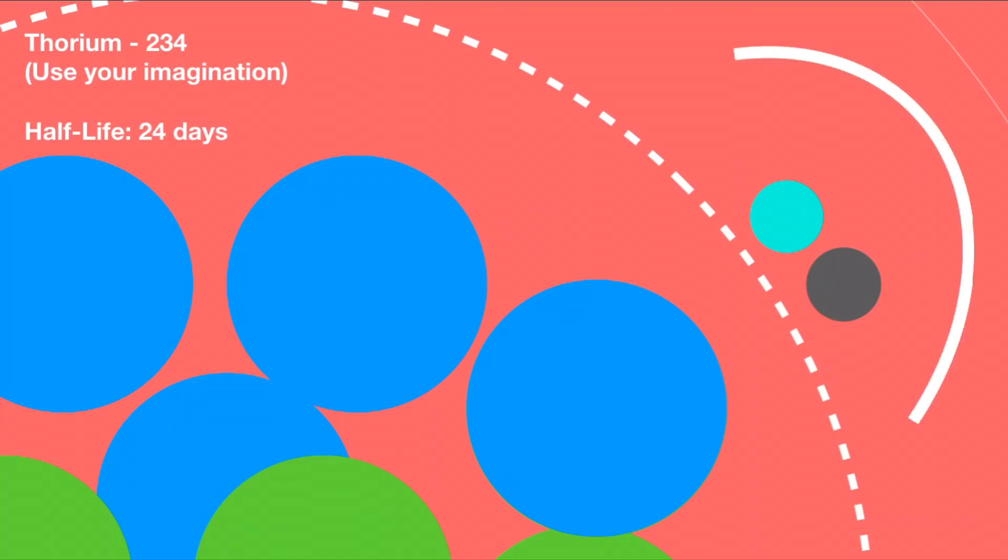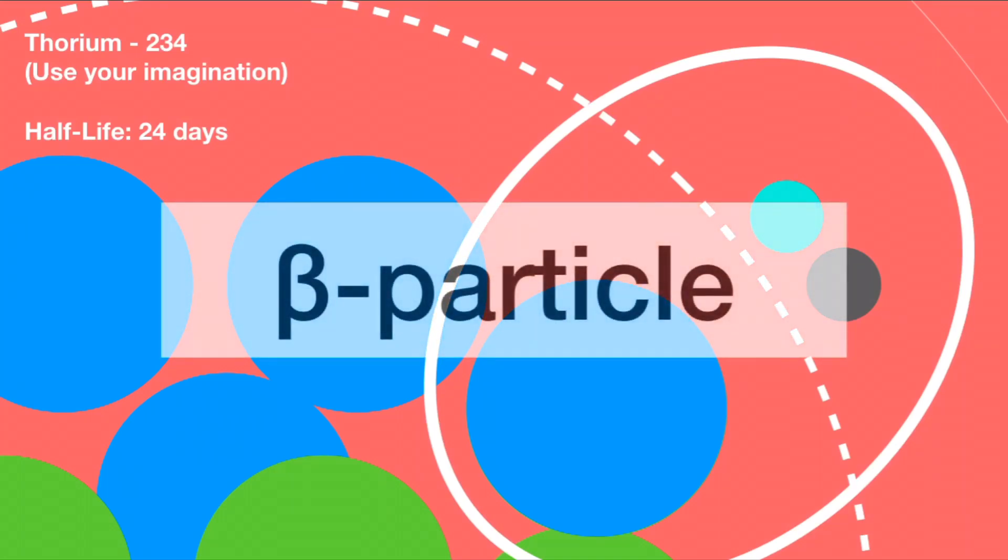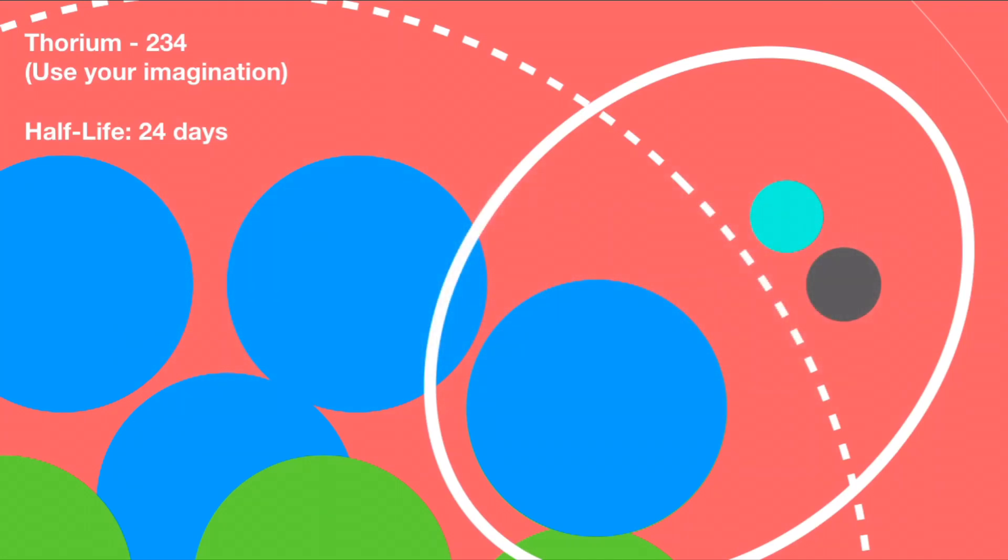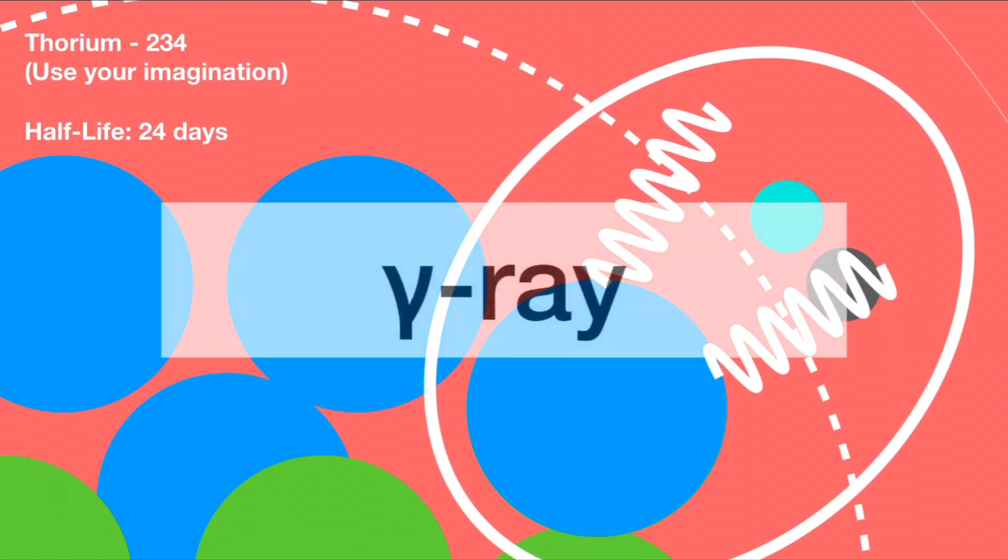For simplicity, this decay of a neutron into a proton, electron, and antineutrino is called beta decay, and the electron is called a beta particle. So that's two forms of radiation, but there is a third. In fact, this third form of radiation is released during both alpha and beta decay. Gamma rays.